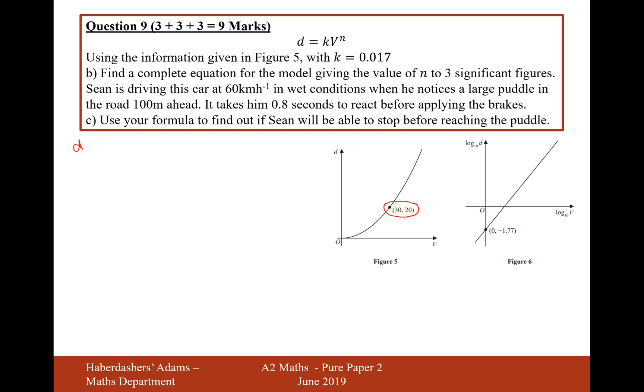When d equals, actually no, v is the x-axis, isn't it? So d will be 20, v equals 30. So it's going to be for part b, 20 equals 0.017 times 30 to the power of n.